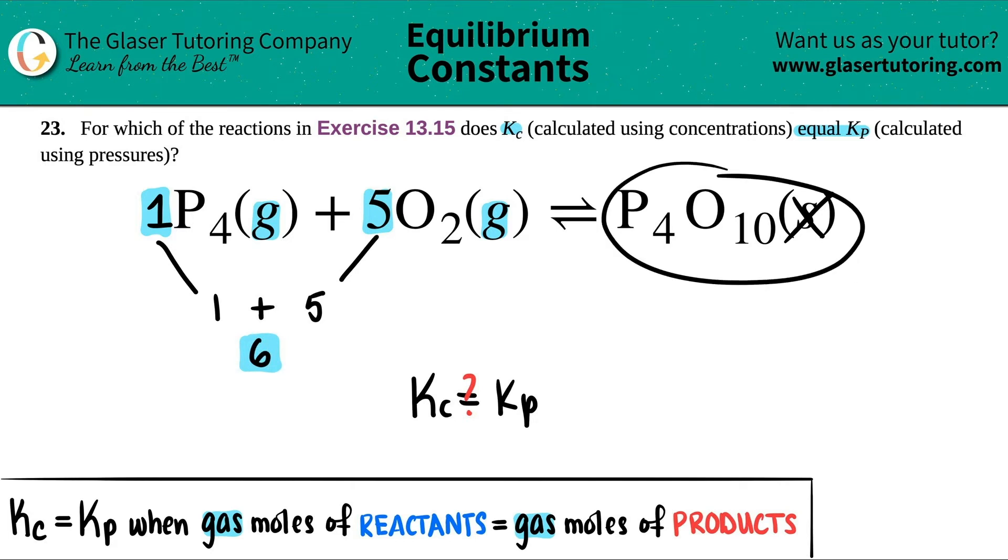But when I come over here, I have no number, so I have zero moles of gas on the product side. Six moles of gas on the reactant, zero moles of gas on the product. Kc equals Kp only works when those moles equal each other. Six does not equal zero.